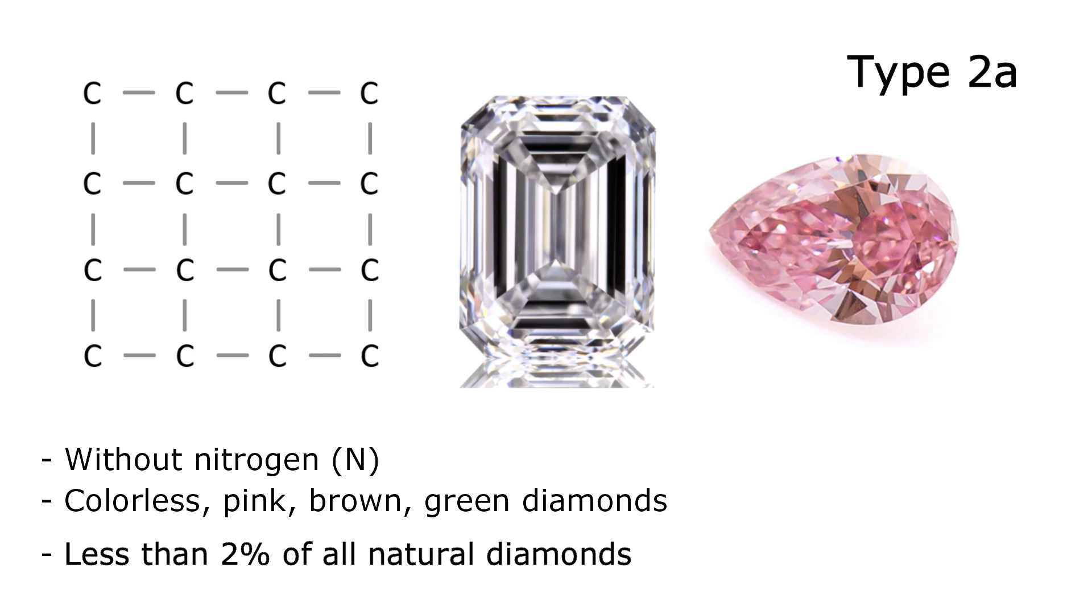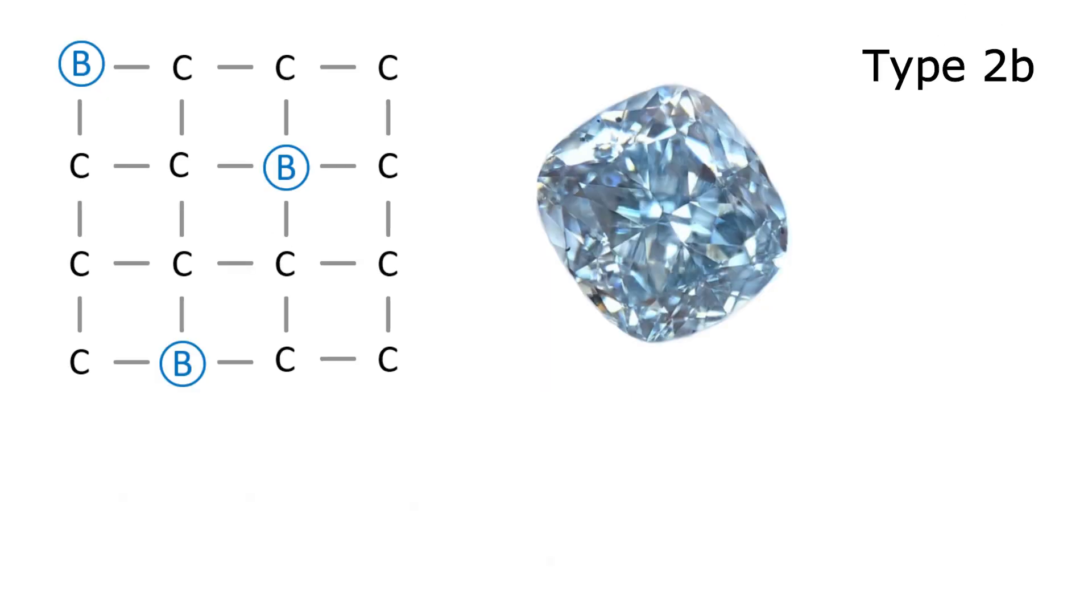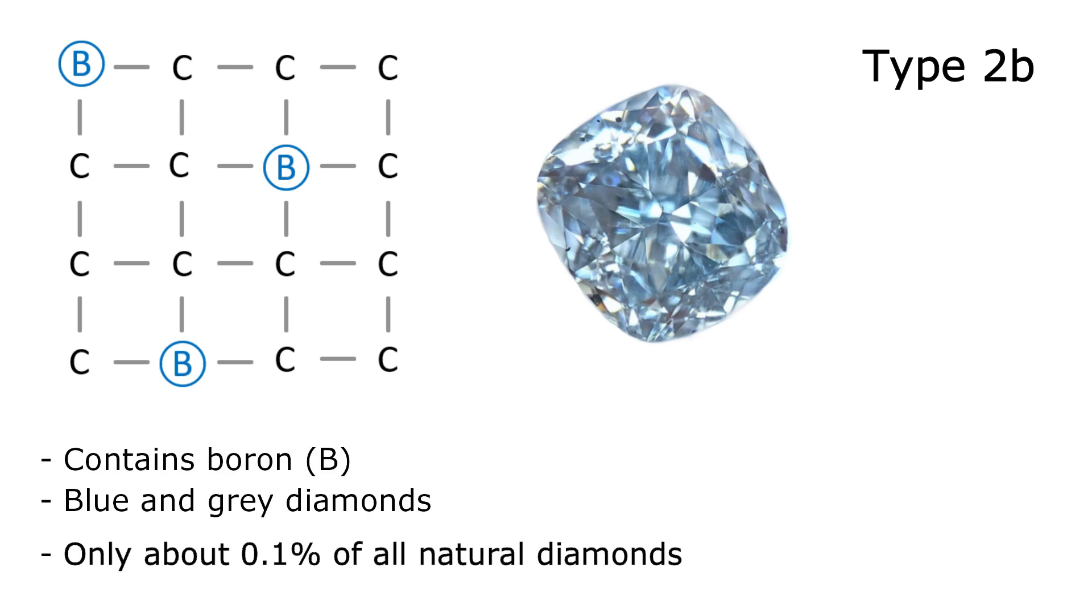Type 2b contains boron. They come as blue and gray diamonds. Only about 0.1% of all natural diamonds are of type 2b.